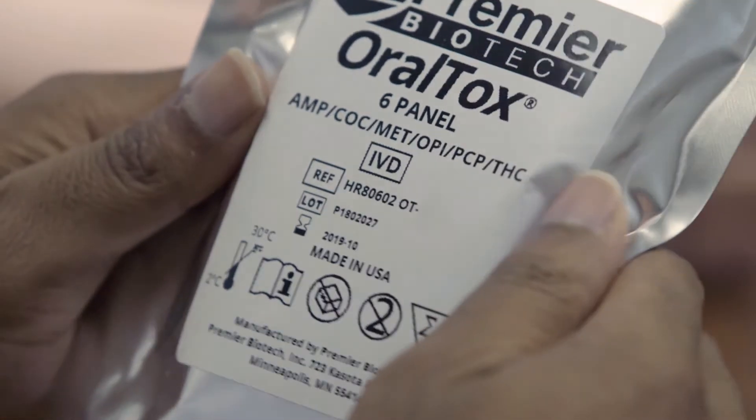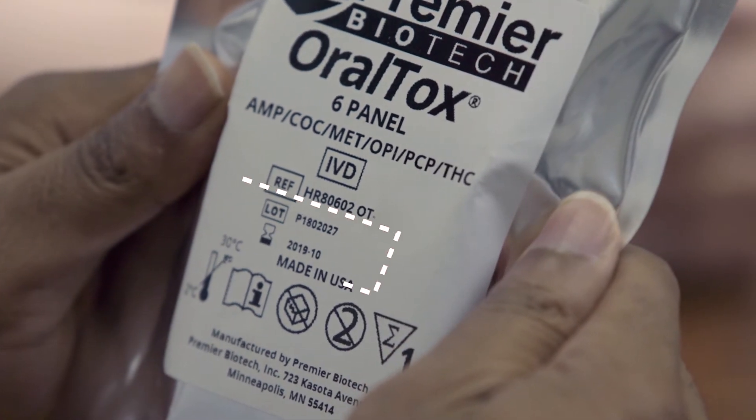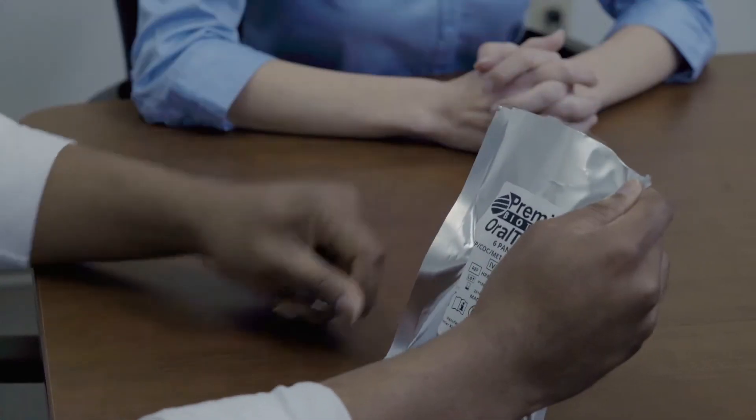Check the lot number and expiration date. To aid in collecting enough oral fluid, the donor should be instructed to pool oral fluid prior to collection. Open the foil pouch and hand the OralTox collector swab to the donor.